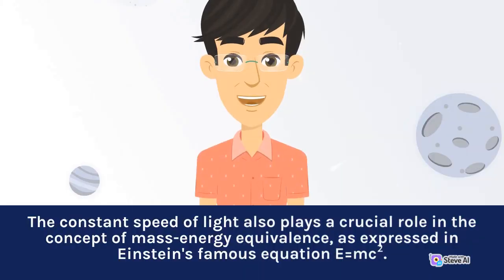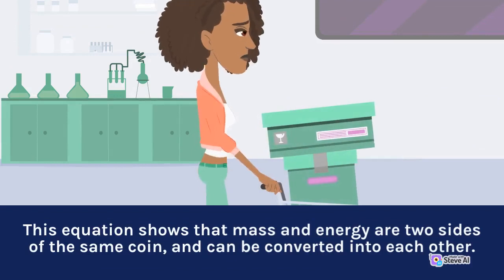The constant speed of light also plays a crucial role in the concept of mass-energy equivalence, as expressed in Einstein's famous equation E equals mc squared. This equation shows that mass and energy are two sides of the same coin, and can be converted into each other.